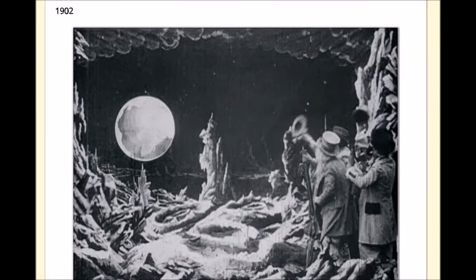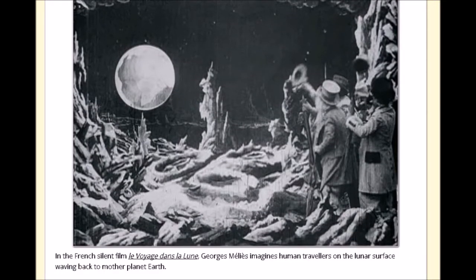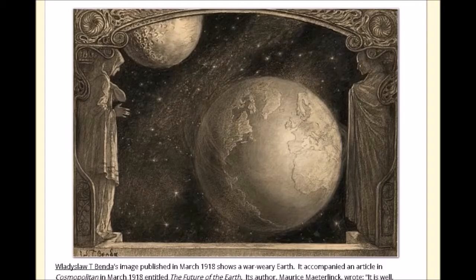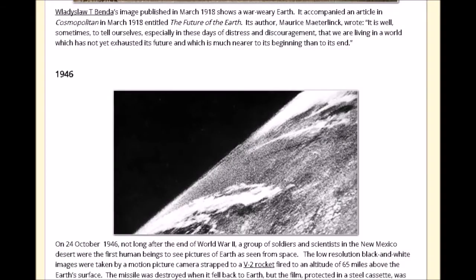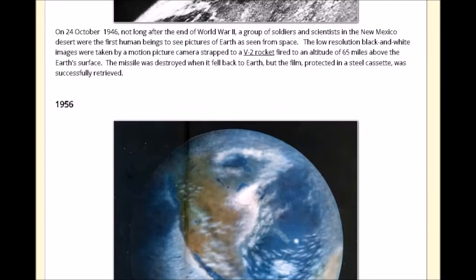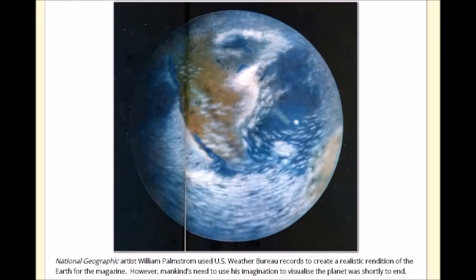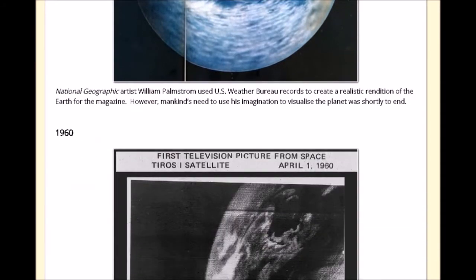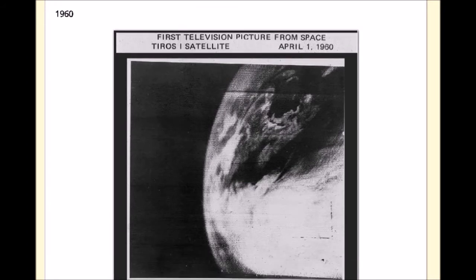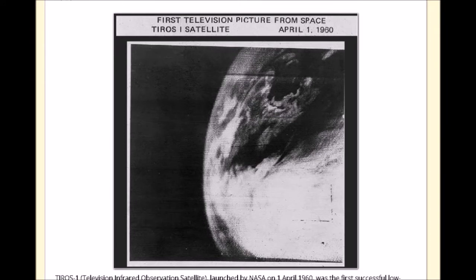1902, we have the earthrise again — so pathetic, the programming here. 1918, this Wladzla, however you pronounce his name. And then we come to the 1946 V-2 rocket shot, which could actually be a legit photograph from a balloon or that V-2 rocket they claim it was taken from — either way, it doesn't really matter; it shows a flat horizon anyways. This 1956 National Geographic artist production looks just like the blue marble. So again, you can see the programming is so pathetic — the science fiction, the artist's renditions — they have everything that they just make up in the 1700s and 1800s, and then it magically is reality in the 1900s.